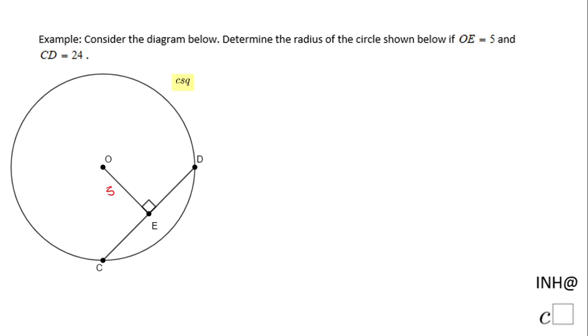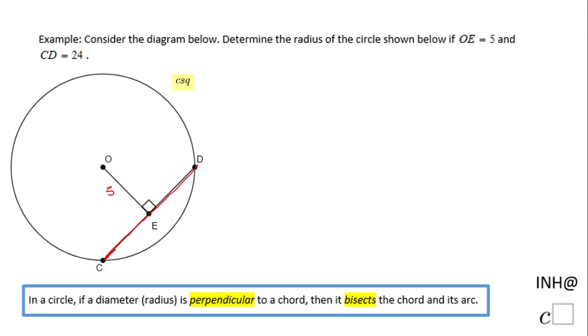For that reason I'm going to use this property you see down here, this theorem which says in a circle if a diameter or radius is perpendicular to a chord, and we notice this fact here because we see this box, then it bisects the chord and its arc.